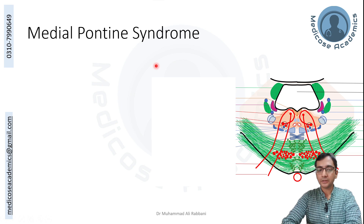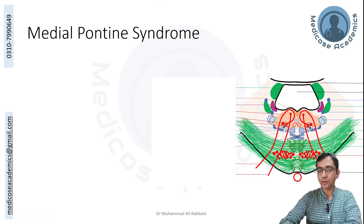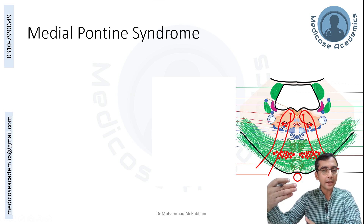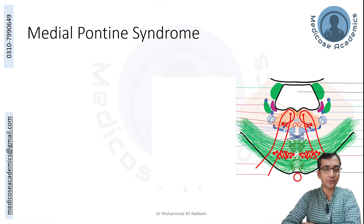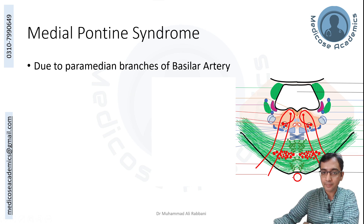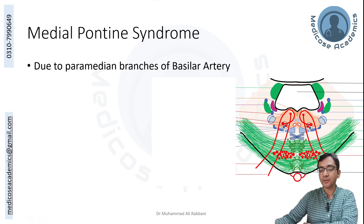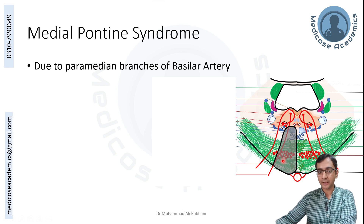We will start with medial pontine syndrome. I always suggest that you focus on the areas that are affected, try to memorize that image, and figure out each of the structures within that affected area. Medial pontine syndrome occurs due to basilar artery blockage, especially the paramedian branches — branches arising from either side of the basilar artery supplying the pons near the midline. When that is affected, this is roughly the area affected near the midline.